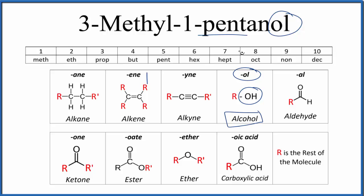Next, we see pent. Pent, that means five. So we have five carbons, and one of them is going to have an OH group on it. It's going to be the first carbon.